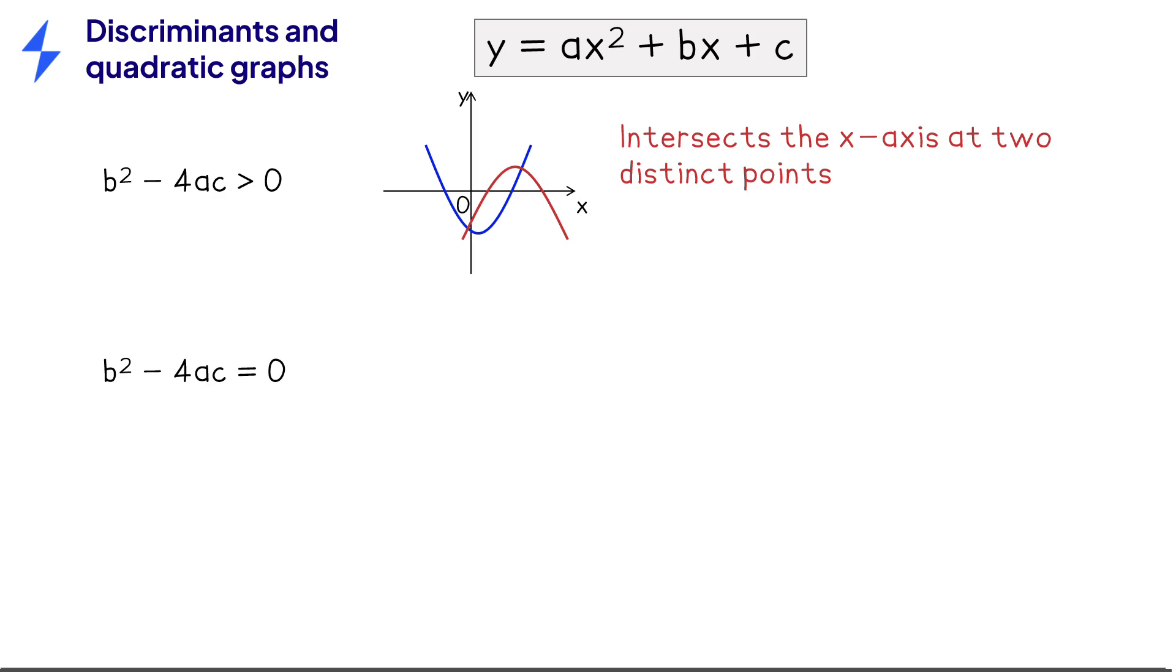If the discriminant is zero, then the graph will just touch the x-axis. In other words, the x-axis will be a tangent to the graph.